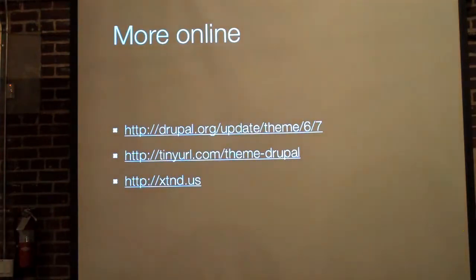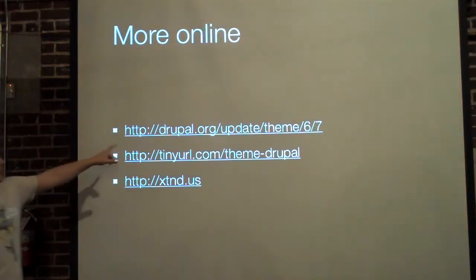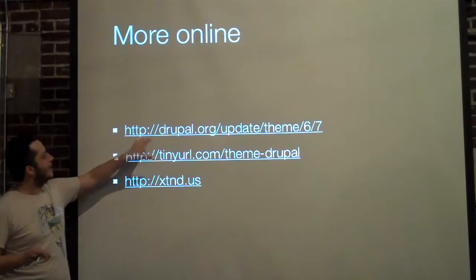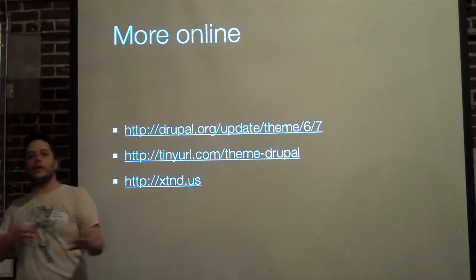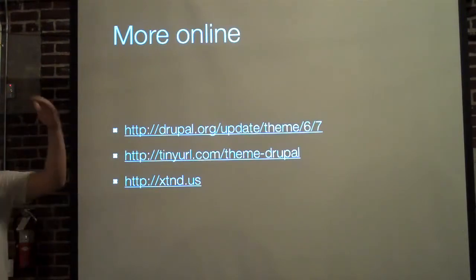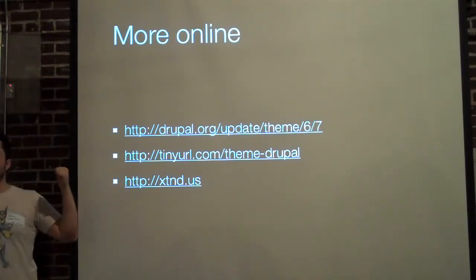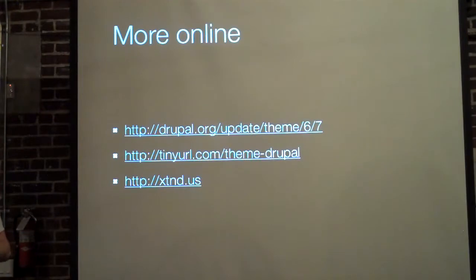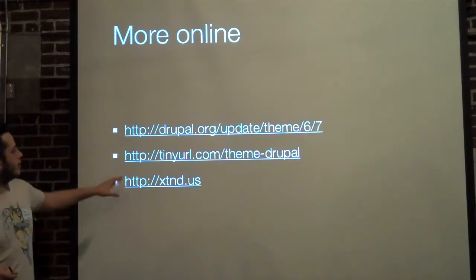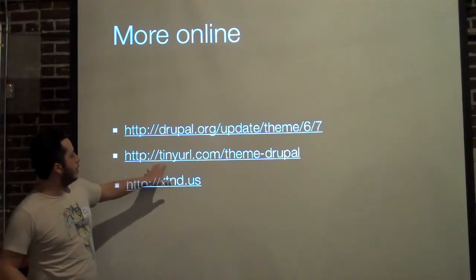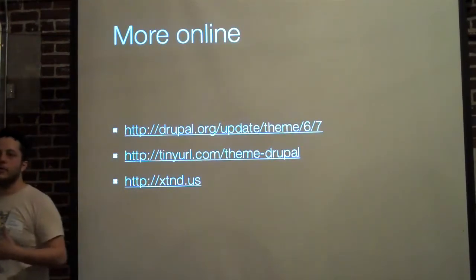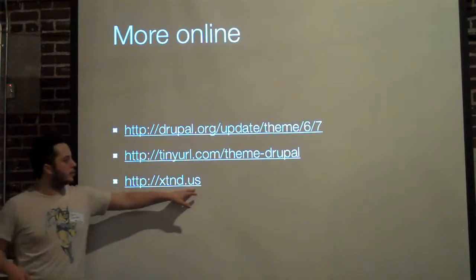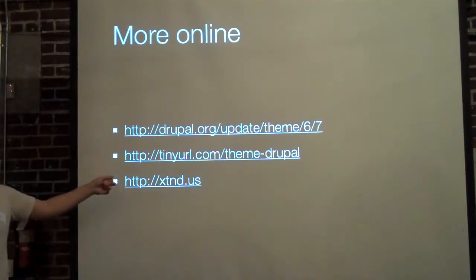So I'm done for tonight, part one. Here are some links to share: drupal.org/update/theme/6/7 is the upgrade path documentation for taking your Drupal 6 theme to Drupal 7 — a lot of the points covered here are on that page, with code samples showing six to seven. There's also a link to my lynda.com training, and if anybody uses Dreamweaver or Eclipse, I have free Drupal plugins for those available at ExtendUs.